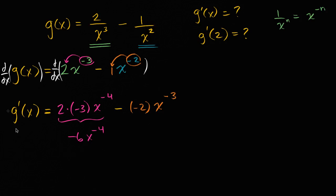And so we can rewrite all of this business as the derivative g prime of x is equal to negative six, negative six x to the negative fourth. And now we're subtracting a negative, so we could just write this as plus two x to the negative three. This negative cancels out with that negative. Subtract a negative, the same thing as adding the positive. So we did the first part.